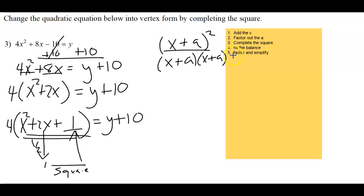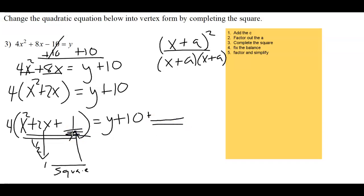Step 4 is to fix the balance. On the left side I added a new number to get a perfect square trinomial. But since this is an equation, I must add the same value to the other side as well. The 1 inside is actually being multiplied by 4, so I do 4 times 1, which is 4. I add 4 over to the right side.